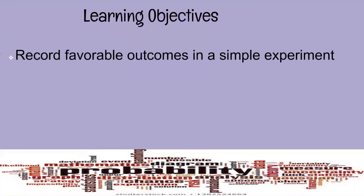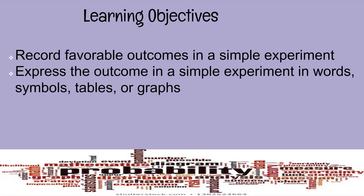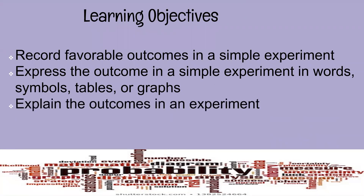Number one: we have to record favorable outcomes in a simple experiment. Number two: express the outcome in a simple experiment in words, symbols, tables, or graph. Number three: explain the outcomes in an experiment.